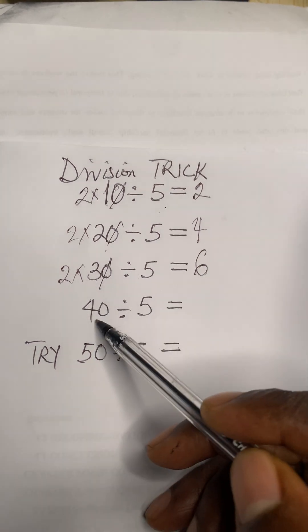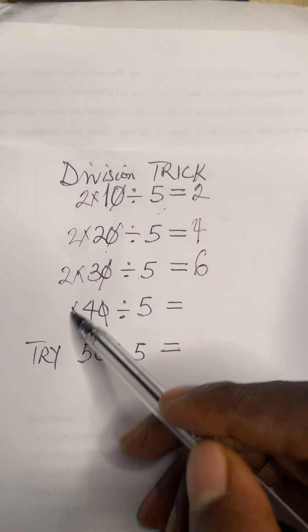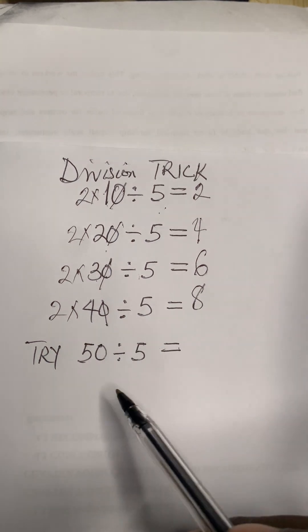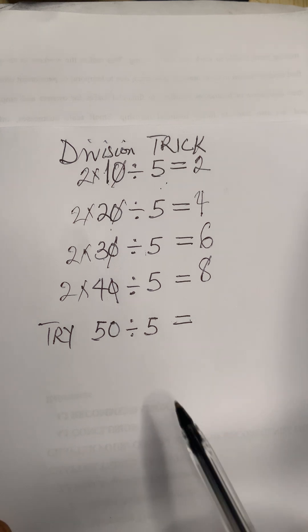What about this? Cancel the zero, multiply by two. Two times four will give you eight, that's the answer. Now try with this one whether it will work. I'm testing you now.